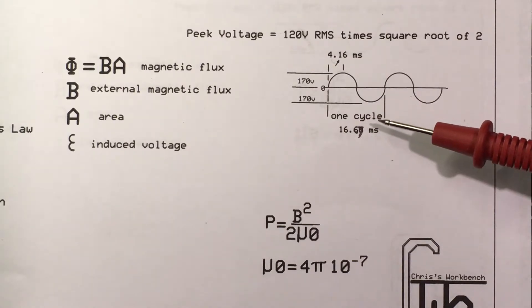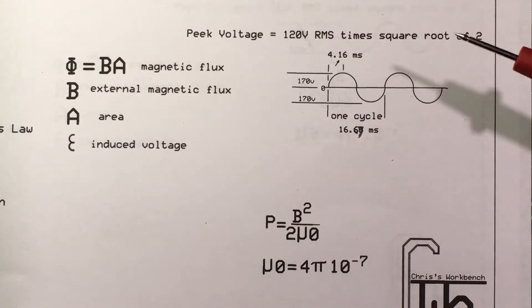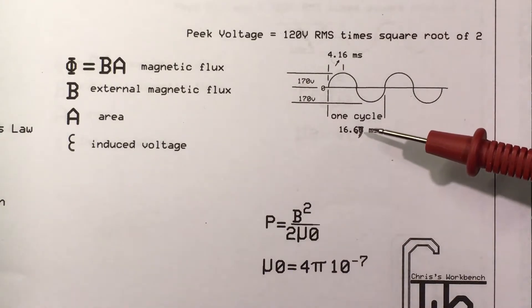If you divide that into a thousand, you get about 60—it's 1/60th of a second, 60 cycles.